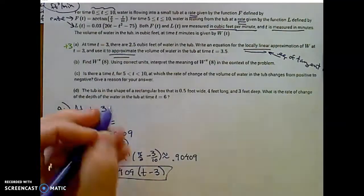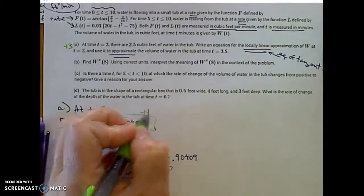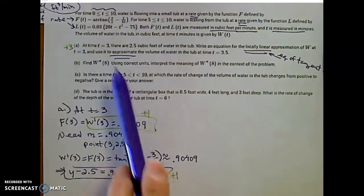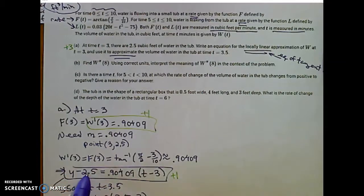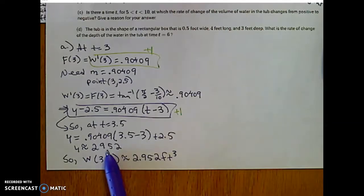That was my equation for local linearity. You've got a point for the slope on this problem. You've got a point for coming up with an equation for local linearity. And now we actually have to use that equation to approximate the volume of water when t is 3.5. Now I can plug in: y is equal to 0.90409 times 3.5 minus 3, plus 2.5. When I pick up my calculator using my local linearity equation, I get 2.952. So w of 3.5 is approximately 2.952 cubic feet at 3.5 minutes using that approximation.